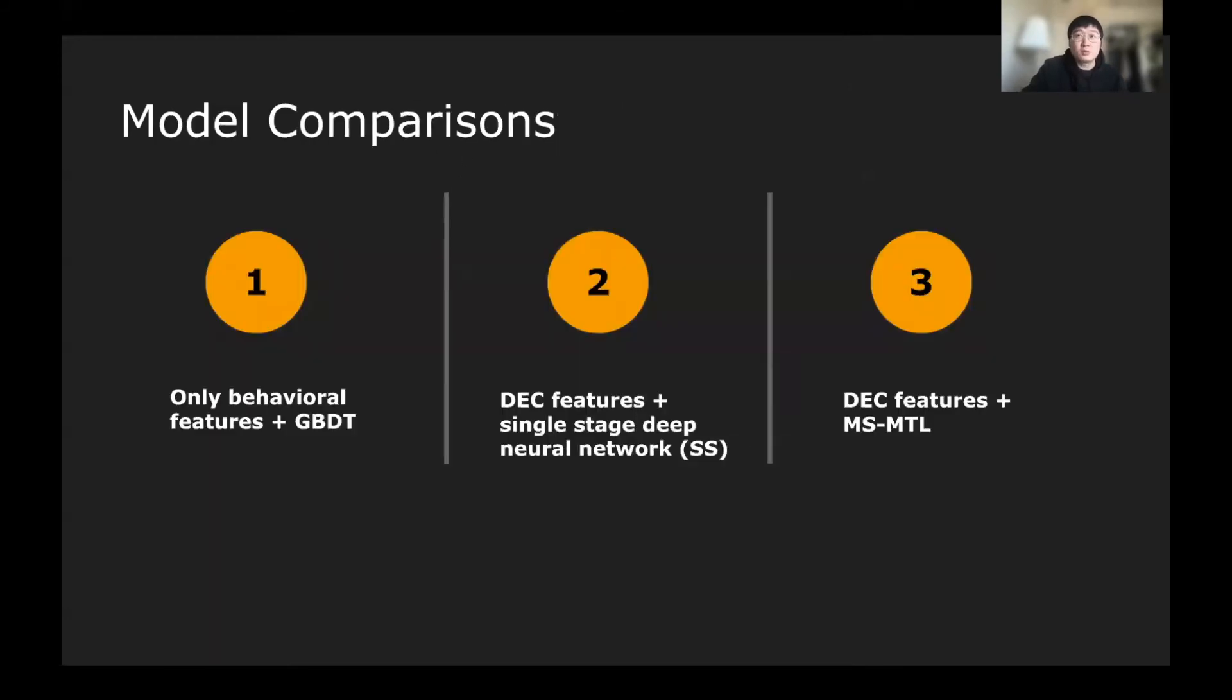Moving on to the model comparison, we tried three models in the experimental part. The first model is a historical model before DEC deployed by Facebook, which is only using behavior features plus GBDT model. The second is a DEC features plus single-stage deep neural network. The third one is DEC feature plus multi-stage multi-task learning, which is a production model used by the current Facebook.